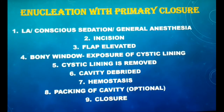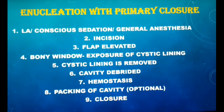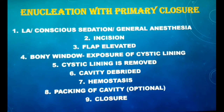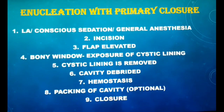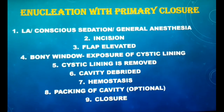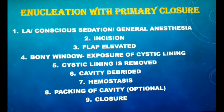The second type of enucleation is enucleation with primary closure. From an exam point of view, students are expected to explain this technique and its steps when asked about enucleation. These are the basic steps of enucleation in any odontogenic cyst. Enucleation can be performed under local anesthesia, conscious sedation, or general anesthesia. In any case, before the incision is demarcated, the area should be infiltrated with local anesthesia containing vasoconstrictor. This helps in easy separation of the cystic lining from the periosteum.